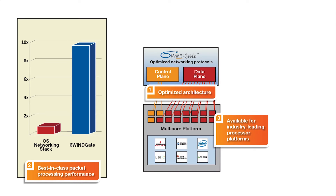6Wingate supports multi-core processors from suppliers such as Cavium, Broadcom, Intel, LSI, TI, and TILERA. This allows developers to focus their efforts on their value-added application software and then use 6Wingate to ensure that they achieve maximum performance across a product portfolio based on whichever processor architectures they select.